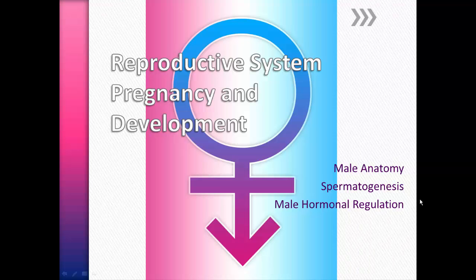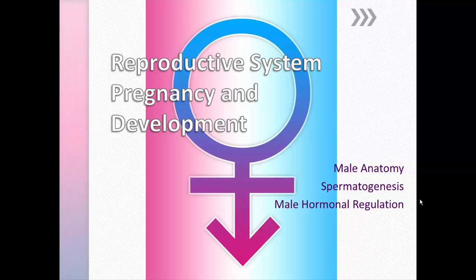That concludes the quick overview of mitosis, meiosis, and the organs of the reproductive system. We'll move on to more detail about male anatomy and hormonal regulation.